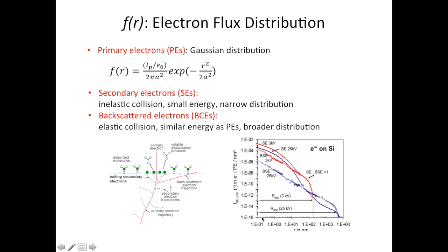When the position is close to the primary beam center, the intensity of secondary electrons exceeds that of the backscatter ones. But when it's further away, the backscatter electrons dominate. This also shows that secondary electrons normally have a smaller energy, which gives a narrower distribution.